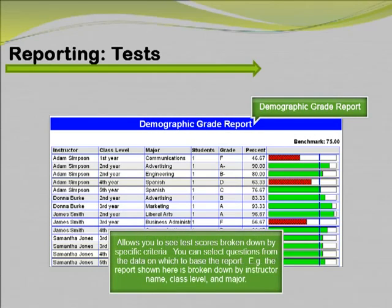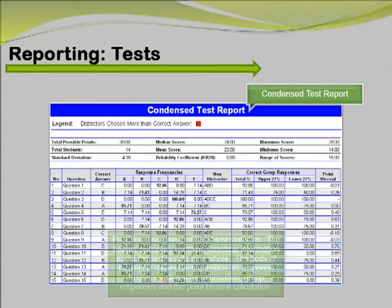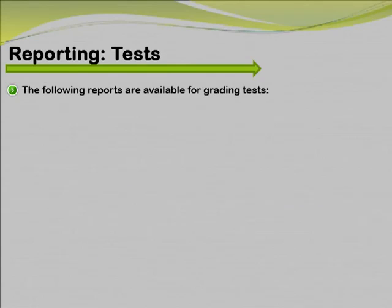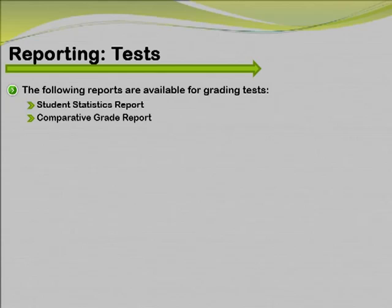The second grading report added is the demographic grade report. This report allows you to see test scores broken down by specific criteria. You can select questions from the data on which to base the report. For example, this report is especially useful for comparing demographic groups. If your students mark a category such as ethnicity on their test answer sheet, you can view the data by ethnic group. The last grading report added to the latest version is the condensed test report, which provides a summary of basic test statistics. The header optionally contains statistical information about the test results as a whole, while the body shows each question, its response frequency, distractor information, group responses, and the point biserial calculation.